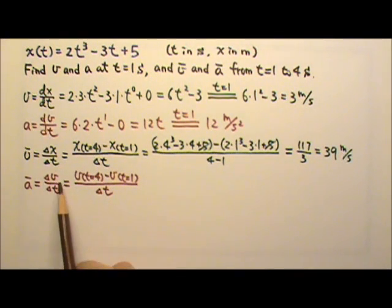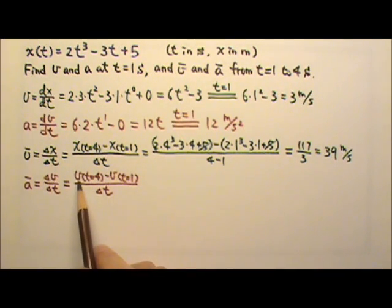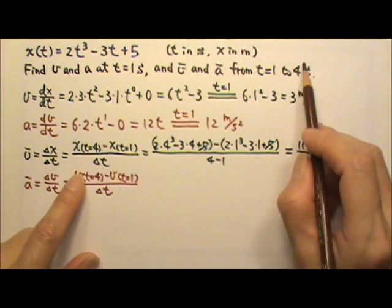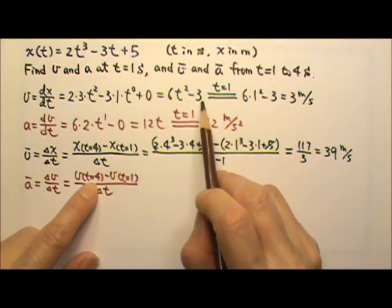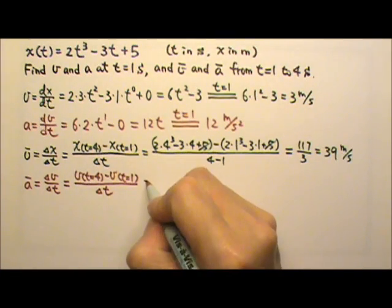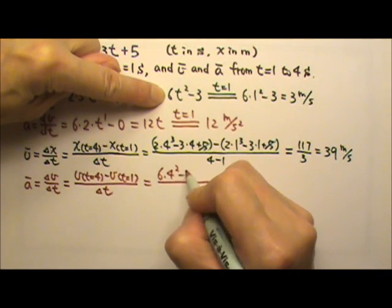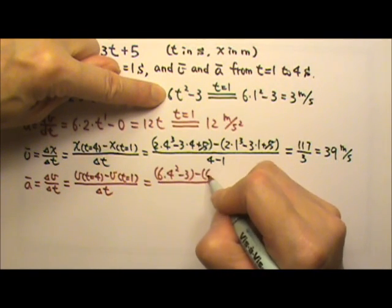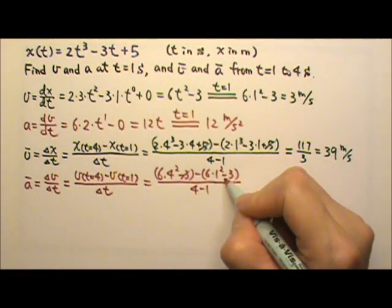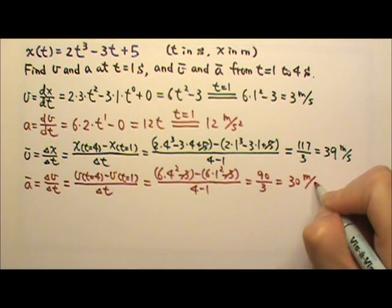The definition of average acceleration is delta v over delta t. Since we already have velocity as a function of time, we find v(4) minus v(1) divided by delta t. That's 6 times 4 squared minus 3, minus 6 times 1 squared minus 3, over 4 minus 1. The negative 3 terms cancel, giving us 90 divided by 3, which equals 30 meters per second squared.